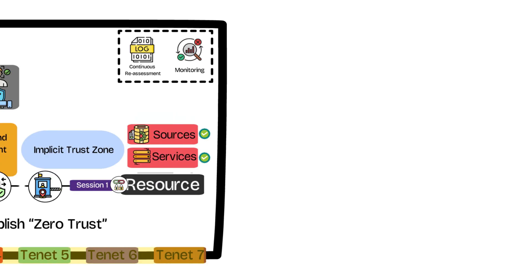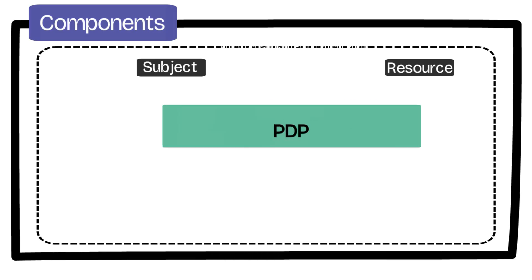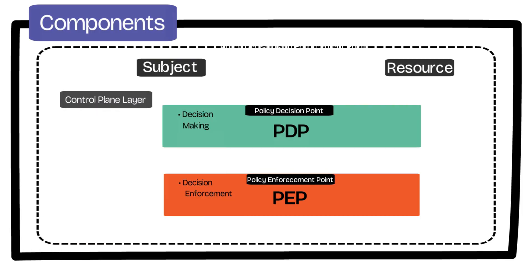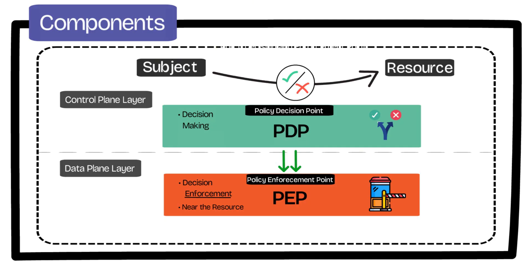Let's now take a deeper dive at each of the core components that bring the zero trust architecture to life, starting by expanding our foundational diagram between the subject, the policy decision and enforcement point, and the resource. The policy decision and enforcement point is made up of two distinct components that work together to allow or deny communication from subject to resource. These two components are decoupled, with one doing the enforcement while the other makes the decisions. The policy decision point lives in the control plane layer and is responsible for ultimately deciding whether a subject should be granted access to a given resource. The policy enforcement point resides in the data plane layer, positioned close to the resource and responsible for enforcing decisions made by the policy decision point — acting as a gatekeeper following the instructions issued by the decision point. This architecture allows gatekeeping to happen near the resource while keeping policy logic and decision making centralized.